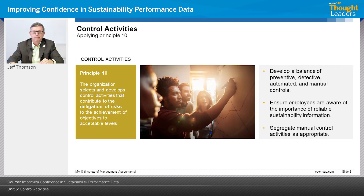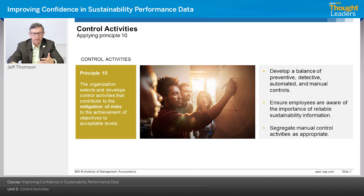Principle 10: the organization selects and develops control activities that contribute to the mitigation of risks. You identify a risk, and a control activity is a specific task — such as segregation of duties — that manages or mitigates that risk to an acceptable level.